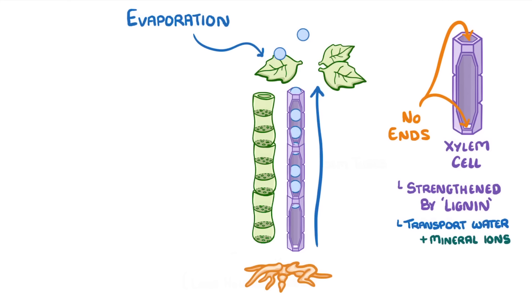The terms you need to use when discussing this can be a bit unclear, but basically we call the evaporation of water from the leaves transpiration, and the chain of water molecules is known as the transpiration stream.